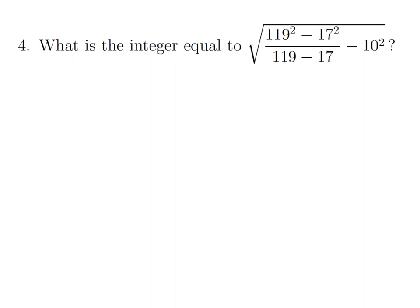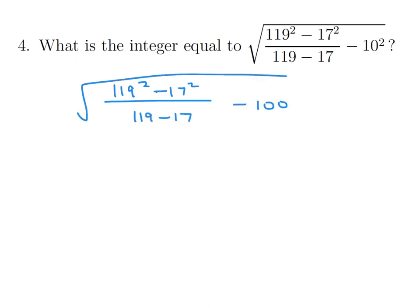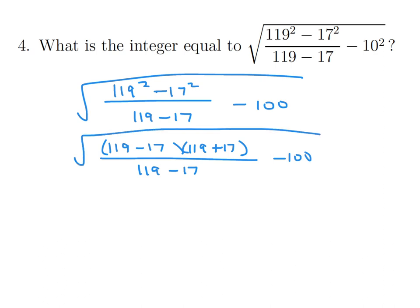What is the integer equal to the square root of (119 squared minus 17 squared) over (119 minus 17) minus 100? Factoring the numerator as a difference of squares: (119 minus 17)(119 plus 17) over (119 minus 17) minus 100. The (119 minus 17) terms cancel, leaving 119 plus 17 minus 100, which is 136 minus 100 equals 36, and the square root of 36 is 6.